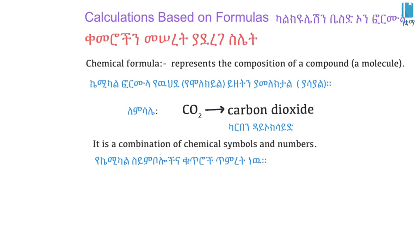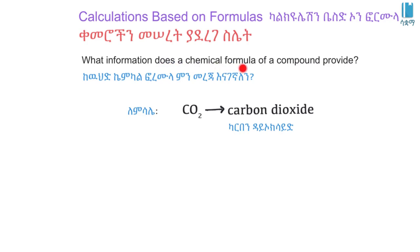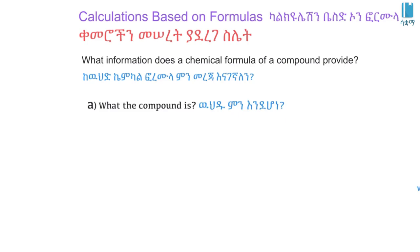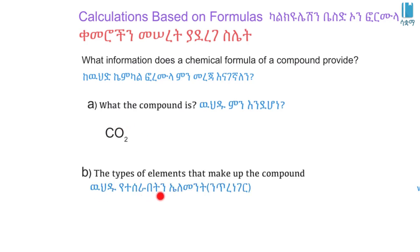What information does the chemical formula of a compound provide? The chemical formula tells us about the composition of the compound — what elements it contains and in what proportion. The chemical formula of carbon dioxide, for example, gives us information about the elements and their relative amounts.